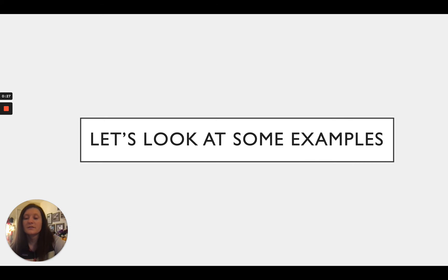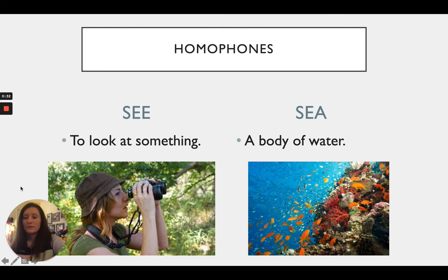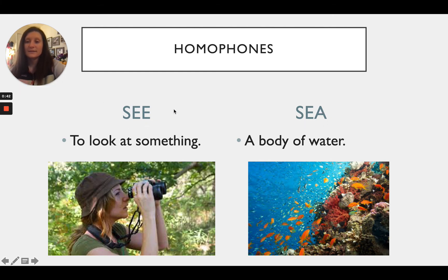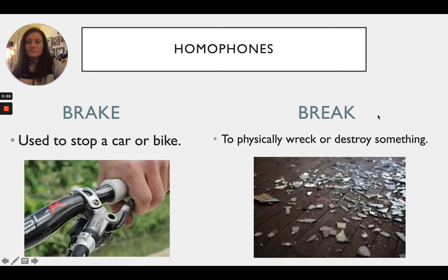Let's look at some examples of what homophones are. Our first example is the words 'see' and 'sea.' If we spell it S-E-E, it means to look at something. But if we spell it S-E-A, we are talking about a body of water.